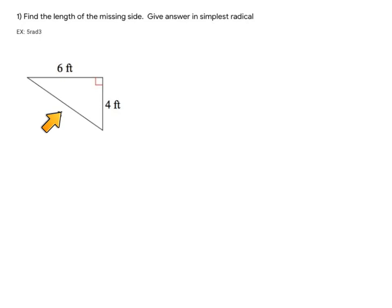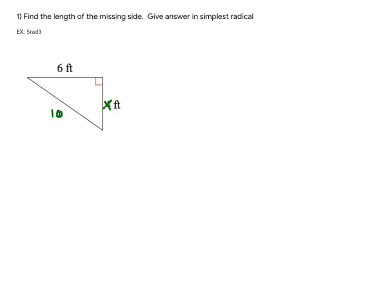It's leg squared plus leg squared equals hypotenuse squared. So if this 4 was an X and this X was like a 10, if I had an X in one leg, a 6 in the other leg, and a 10 in the hypotenuse, then you'd set this up as X squared plus 6 squared equals 10 squared. Because X and 6 are the two legs — the two shortest sides. In our case, what we have is the X in the hypotenuse, so our setup would be 6 squared plus 4 squared equals X squared.